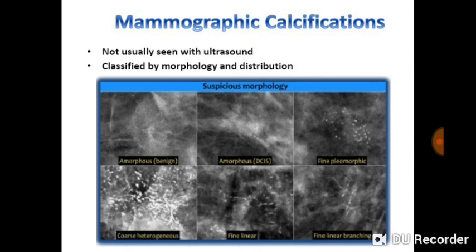There are several ways that calcifications appear on a mammogram. Their morphology can be amorphous — benign or amorphous ductal carcinoma in situ — fine pleomorphic, coarse, fine linear, or fine linear with branching. These are all forms of micro-calcifications. Mostly, micro-calcifications are seen on mammograms, whereas what you see on sonograms might be macro-calcifications. The very tiny calcifications may not be apparent on ultrasound, and the truth is that tiny calcifications are associated a lot with malignancies.